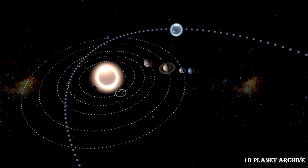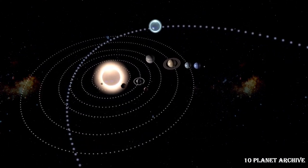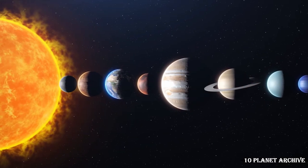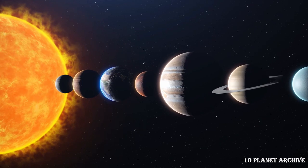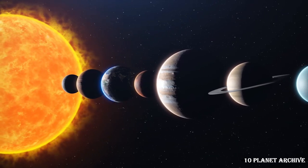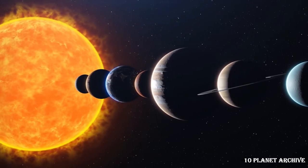Pluto is orbited by five known moons, the largest of which is Charon. Charon is about half the size of Pluto itself, making it the largest satellite relative to the planet it orbits in our solar system. Pluto and Charon are often referred to as a double planet.